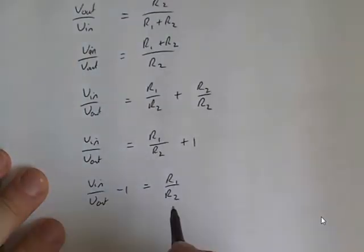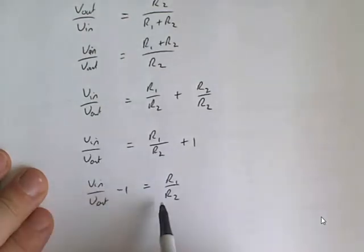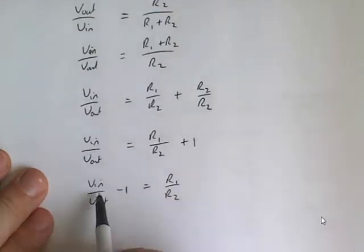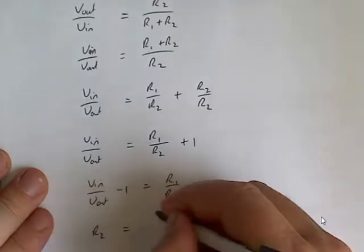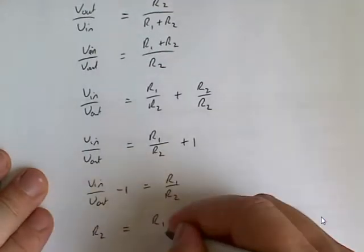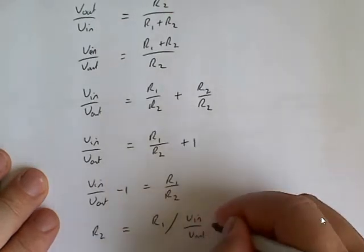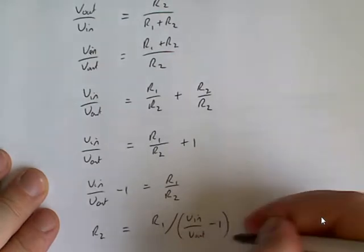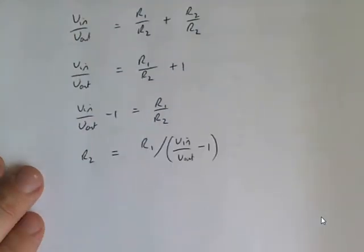And what I can do now is I can simply take this whole thing here and swap it with this whole thing here, because this is on the top on the left hand side, and the bottom on the right I can swap their positions. So R2 equals R1 divided by V in over V out minus 1. A little bit complex, but we'll get there in the end.